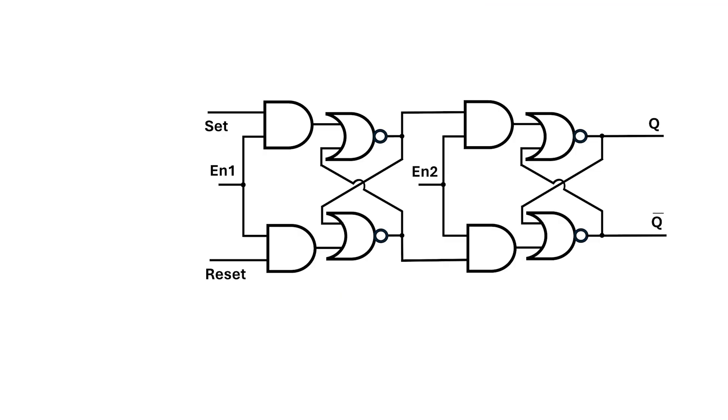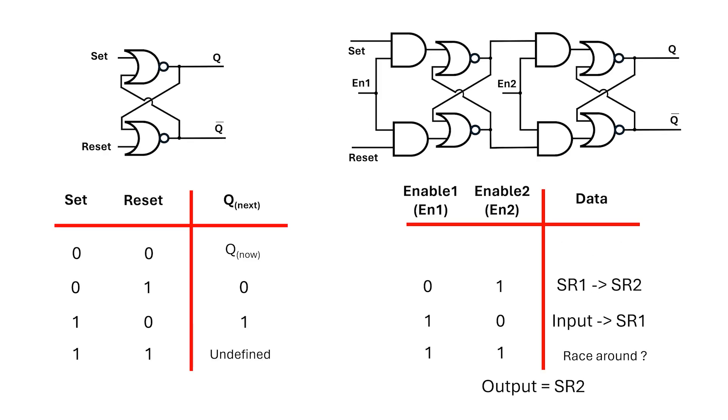I have my SR flip-flop and I'm going to replace the two enables with clock and its inverse clock bar. Now, what I've done is remove the 0, 0 and 1, 1 cases from the truth table and in doing so, we effectively remove the potential for a race around condition. Excellent, but we still have the problem with the SR latch itself, where the values of 1, 1 for set and reset cause the output to be undefined.